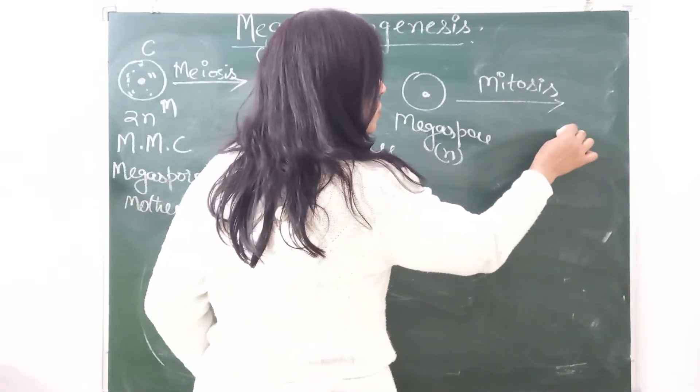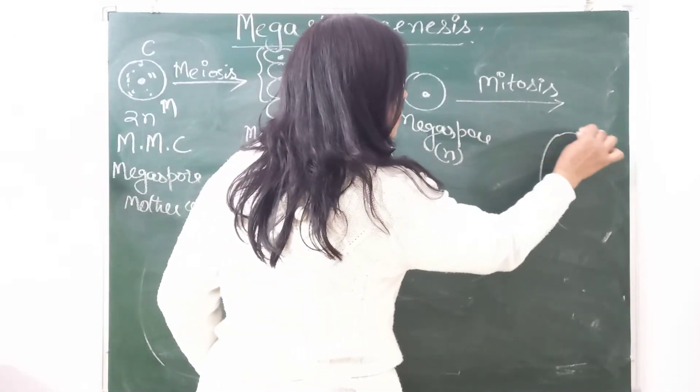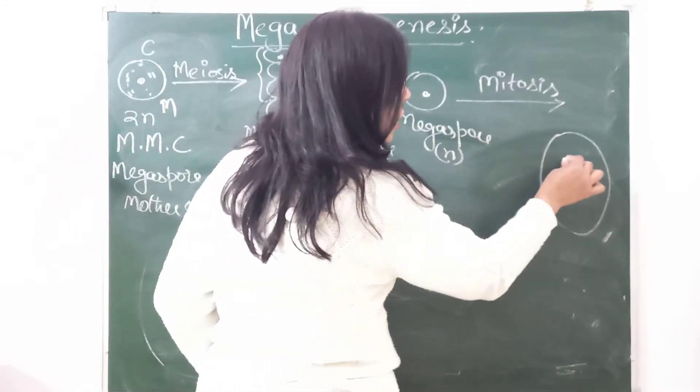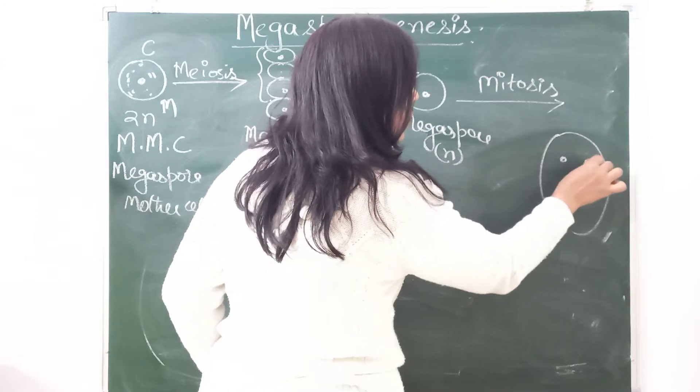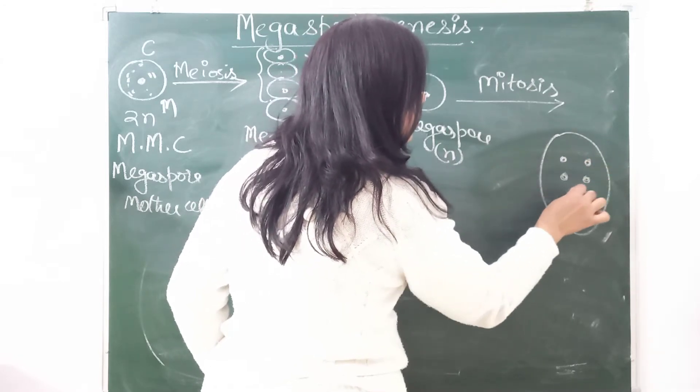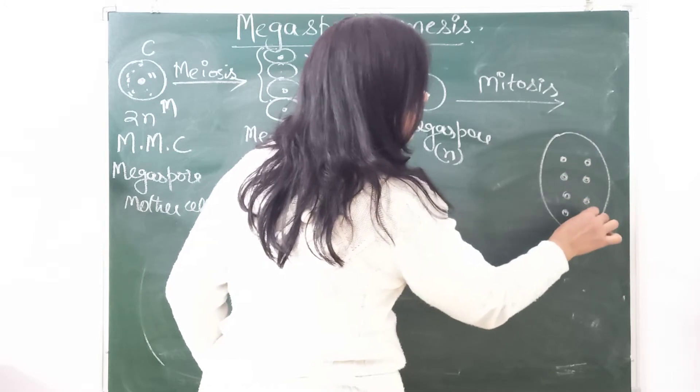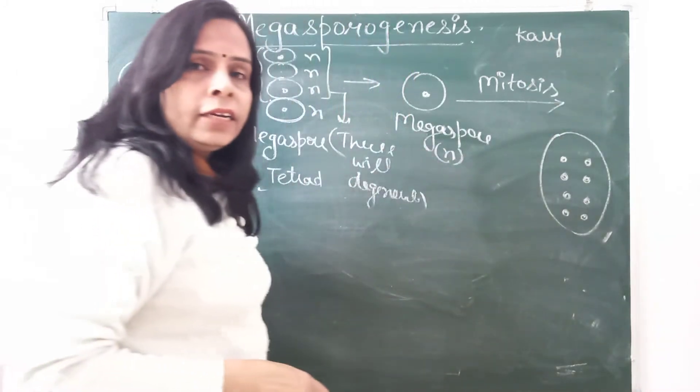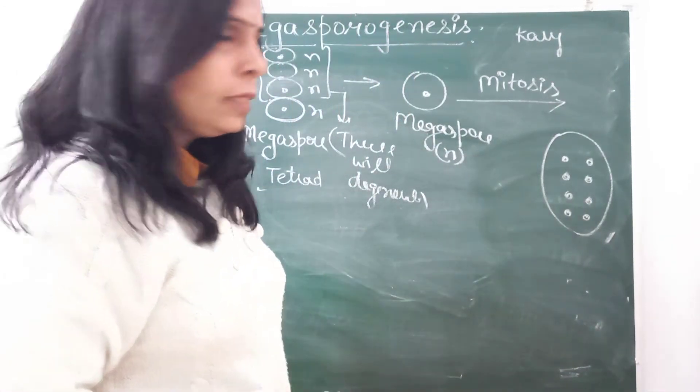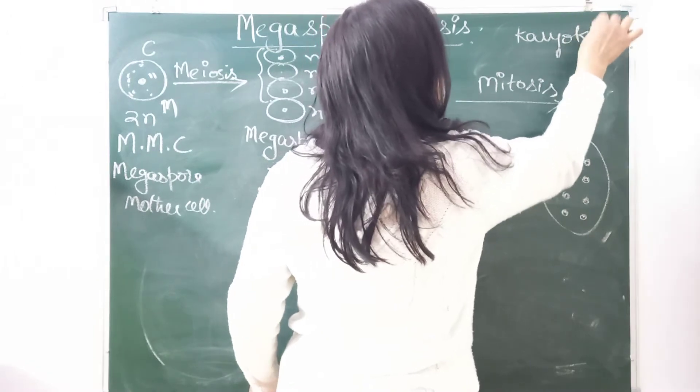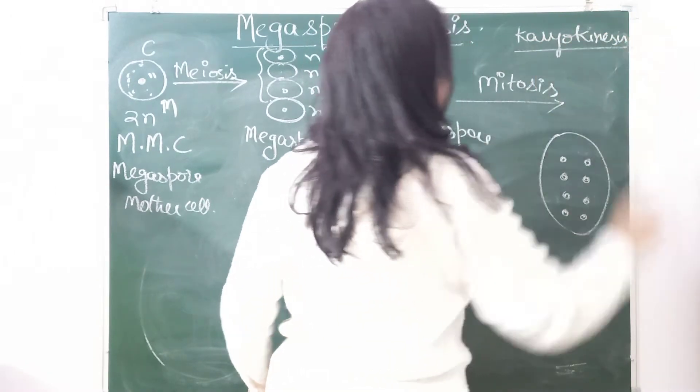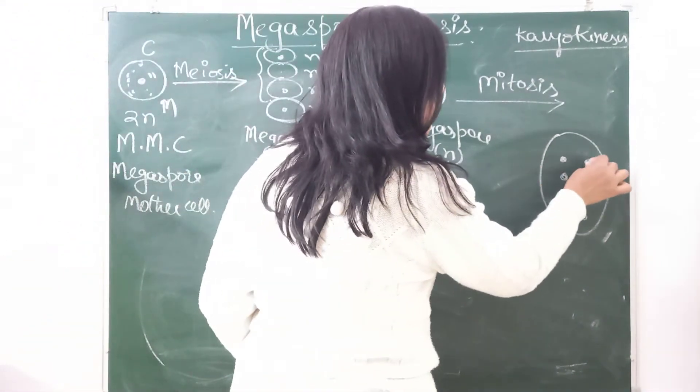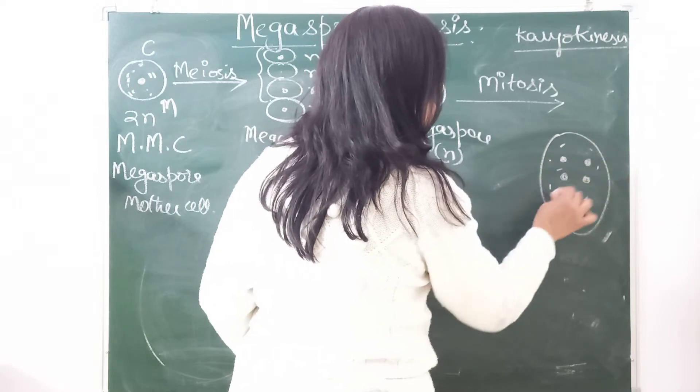After mitosis, what happens? There will be three mitotic divisions. Because of three mitotic divisions, there are formed eight nuclei: one, two, three, four, five, six, seven, eight. Normally in mitosis, what happens? Karyokinesis followed by cytokinesis. But here what happens is only mitotic division of nuclei, only karyokinesis happens. Till now, cytokinesis has not occurred.